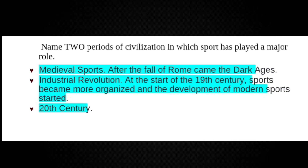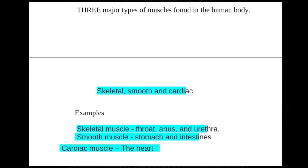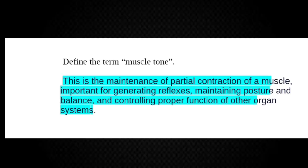To add, we have the 20th century. There are three major types of muscles found in the human body: the skeletal, smooth, and cardiac muscle. Examples include, for skeletal muscle, the throat, anus, and urethra; smooth muscle includes the stomach and intestines; and for cardiac muscle, the heart.